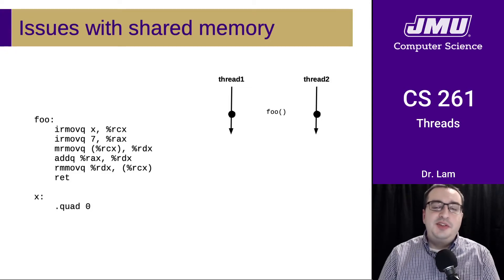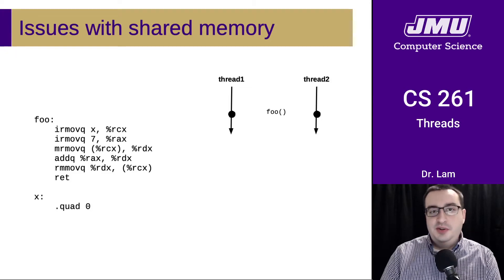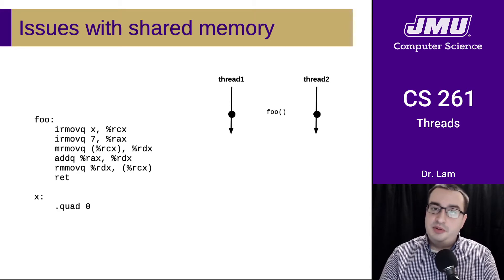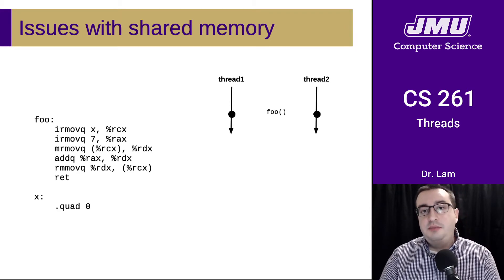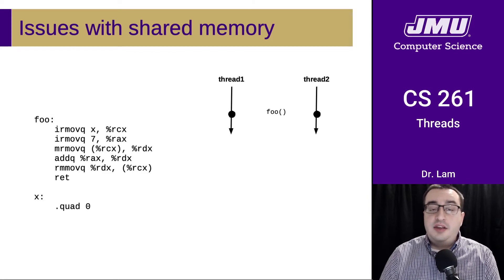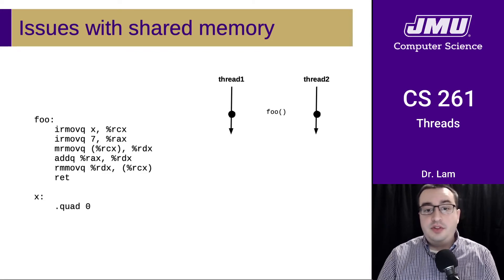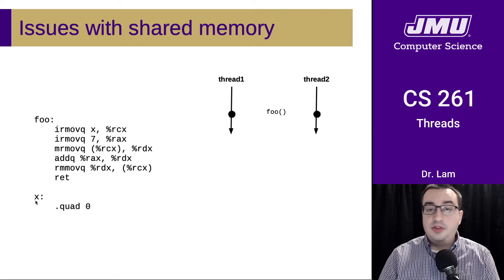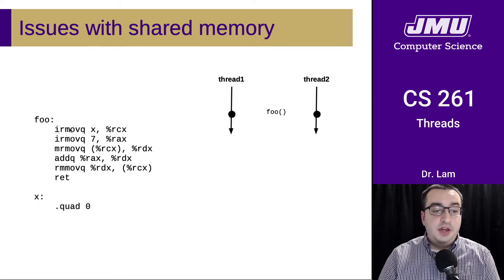As soon as you introduce parallelism, you introduce all sorts of potential problems, especially when the parallel routines can access the same memory. To illustrate this, let's look at a small example. We have some function foo in Y86 assembly, and there's a global variable X that is initialized to zero. Inside of this function,